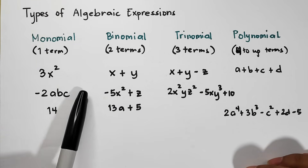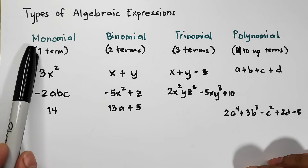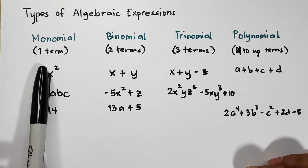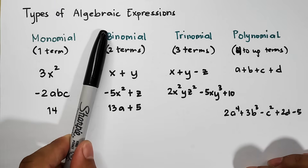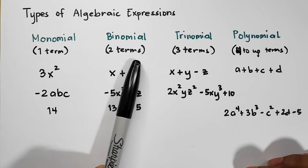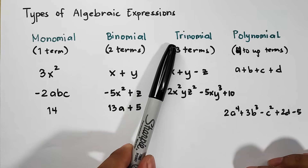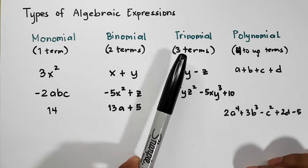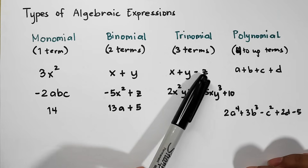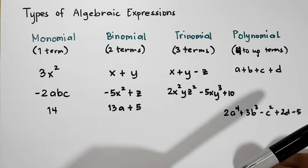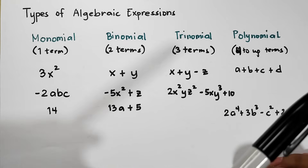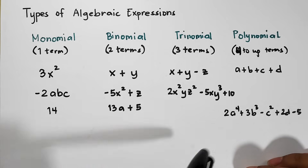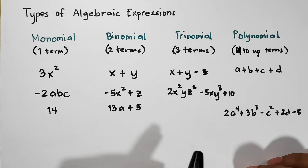Let's have a quick review. Monomial is one term. Binomial is a two-term expression. Trinomial is a three-term algebraic expression. And polynomial is four or more terms.